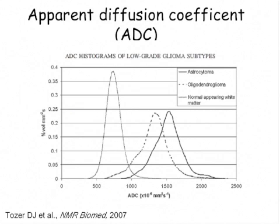ADC is another imaging modality used to differentiate between normal brain and tumor. It is not quite as distinct in determining low- versus high-grade tumors or subtypes, but if you're trying to differentiate an area of stroke versus tumor, it may be useful.